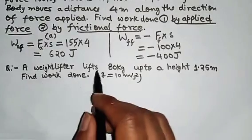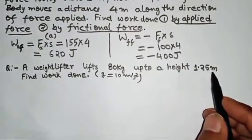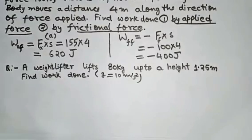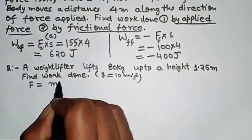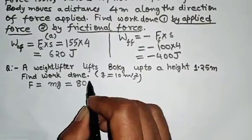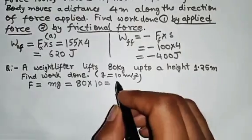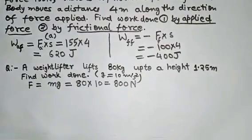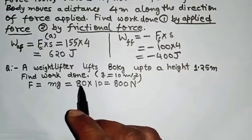Now, next question: a weightlifter lifts 80 kg up to a height of 1.25 meters. Find work done. First we find force: F = mg = 80 × 10 = 800 Newton. The actual value of g is 9.8, but 10 is used for convenience. Now find work done — once again, as stated, this is an incomplete question.